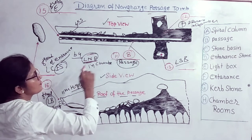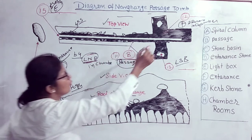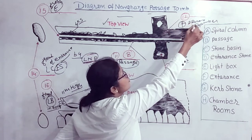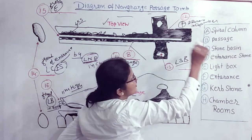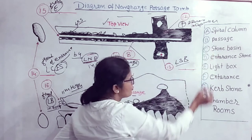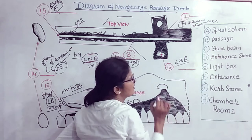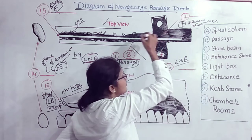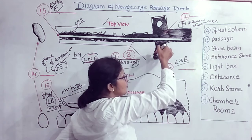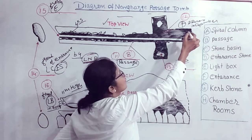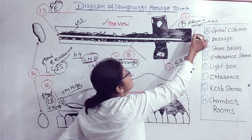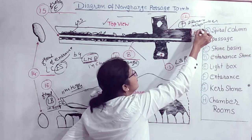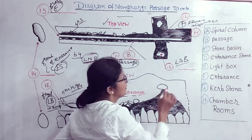For question 12, the speaker mentioned a cross shape with two chambers. The diagram looks like a cross, so we give the answer as chamber rooms — that is H. For question 13, the speaker said 'large stone basin,' so the answer is C.